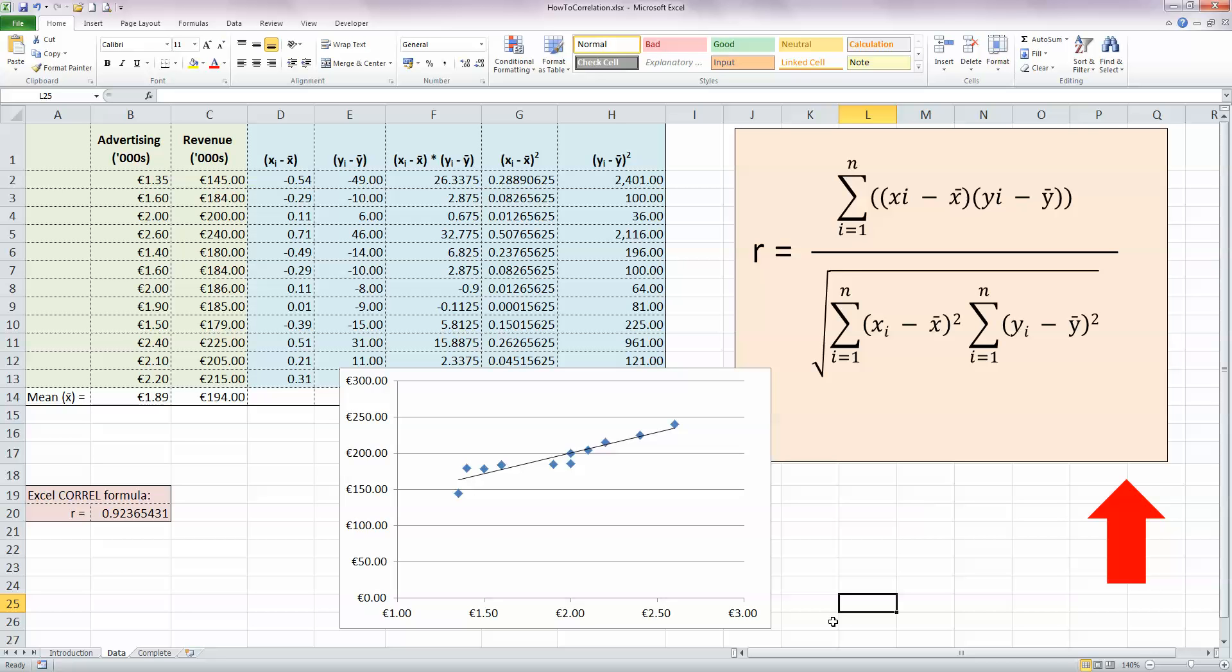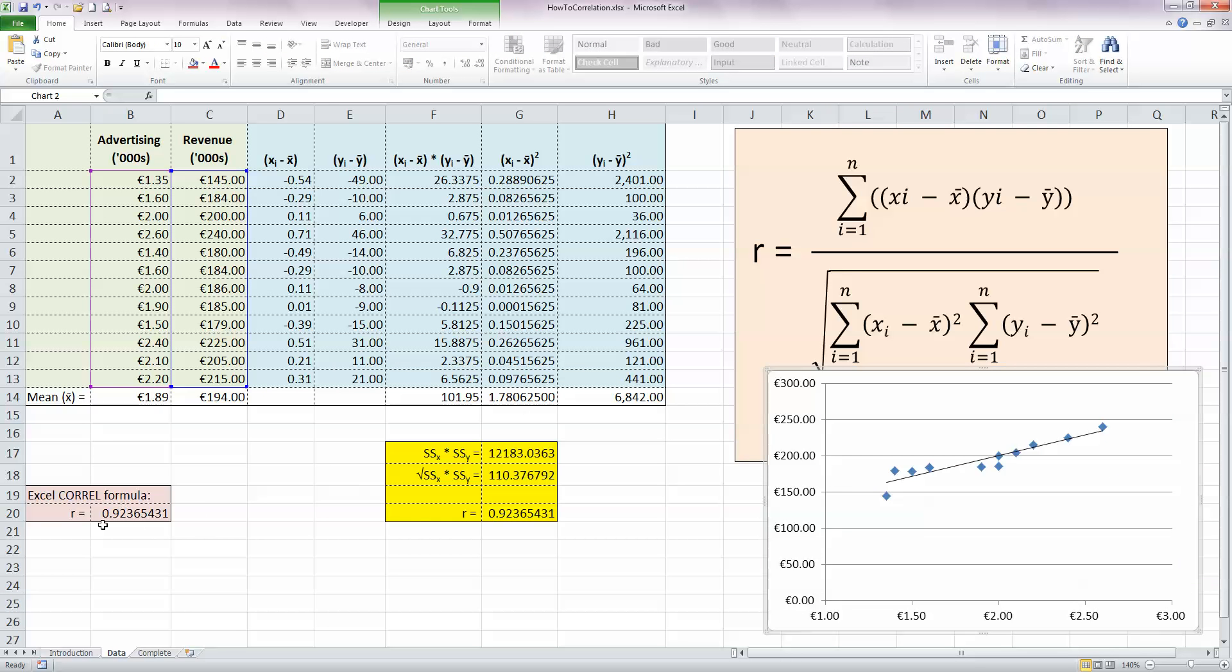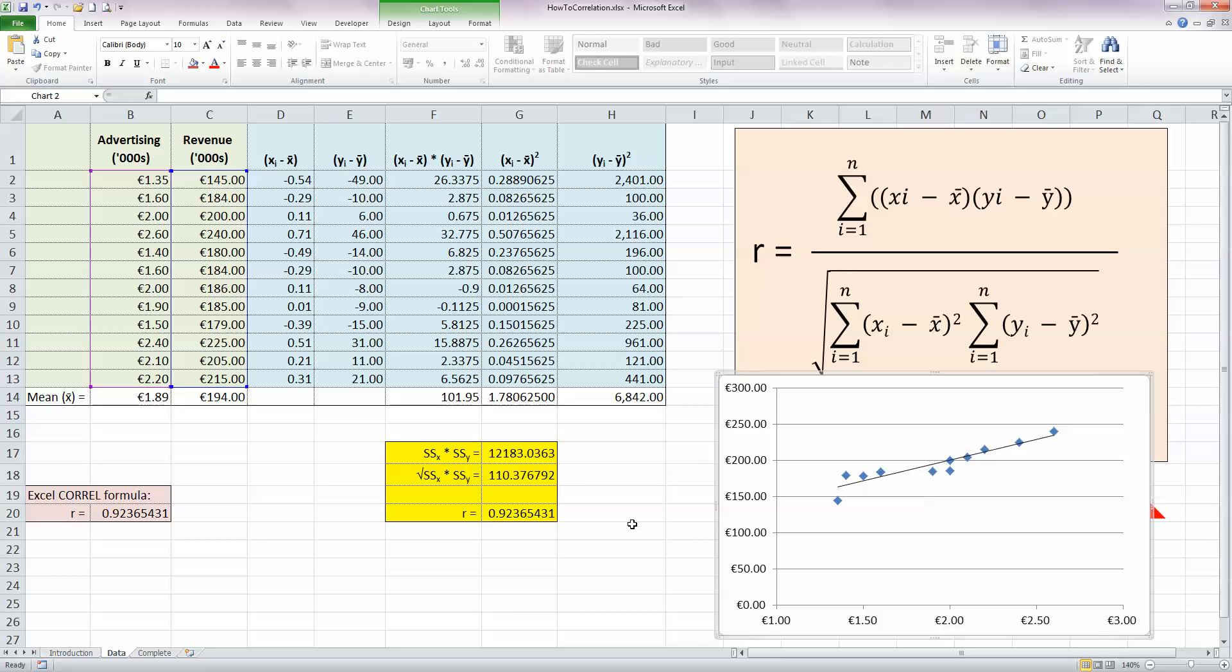So I can conclude both visually here, also with Excel's Corel function, and with my manual calculation, that there is in fact a strong positive correlation between advertising and revenue. So that's how you calculate the correlation coefficient R in Excel.